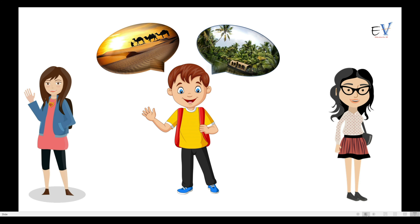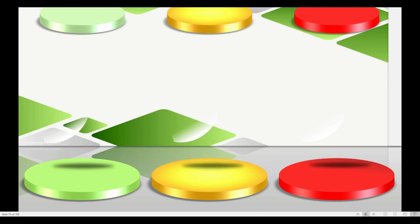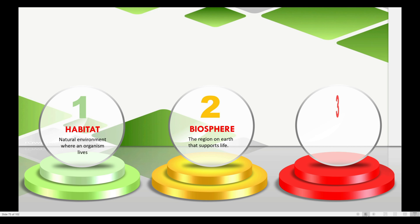Why do animals, vegetation, and the way people live vary from place to place? To understand this better, let us understand three terms and their differences: habitat, biosphere, and ecosystem.